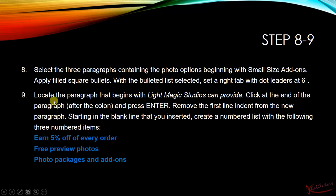Step number 9: locate the paragraph that begins with Light Magic Studios can provide. Click at the end of the paragraph after the colon and press enter. Remove the first line indent from the new paragraph. Starting in the blank line that you inserted, create a numbered list with the following three numbered items.